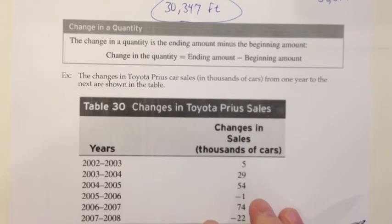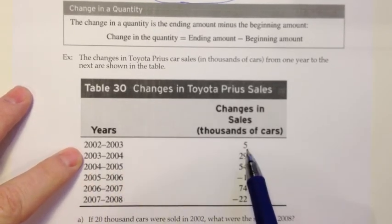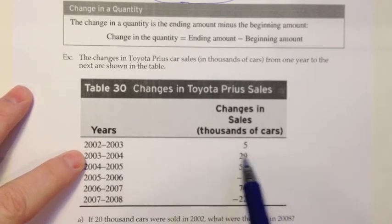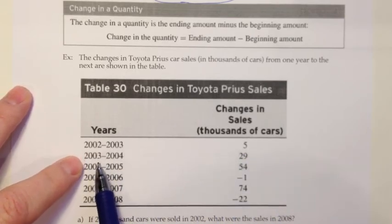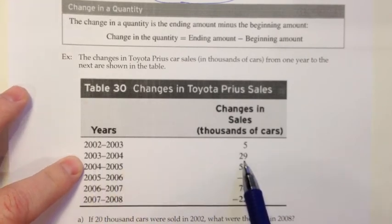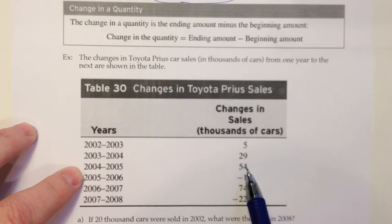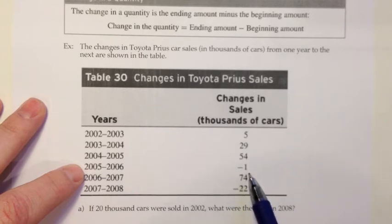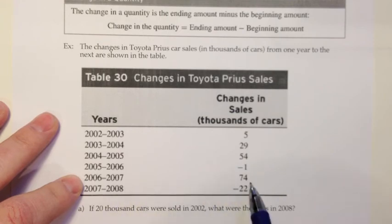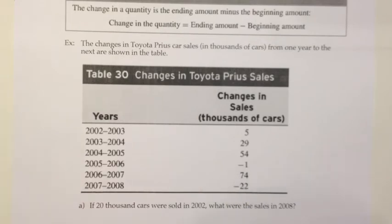Alright, let's look at another example. The changes in Toyota Prius car sales in thousands of cars from one year to the next are shown in the table. As we went from 2002 to 2003, the change was 5 and it's actually 5,000. So since that's positive, I would take that to mean they sold 5,000 more Priuses in 2003 than they did in 2002. When we go from 2003 to 2004, there's a big gain of 29,000 more cars sold. As the next year, it went up even more, an increase of 54,000 cars sold. But for some reason, from 2005 to 2006, they actually lost 1,000 cars worth of sales. But a very nice rebound in 2007, plus 74,000. And then again in 2008, for some reason, we see this dip where it dropped 22,000 in sales.